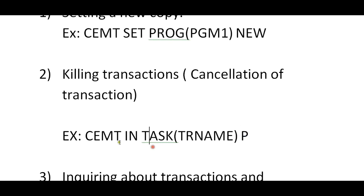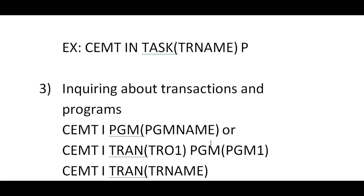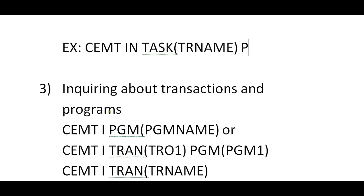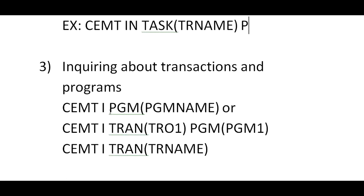The second function is killing or cancelling a transaction: CEMT ENQUIRE TASK and transaction name, then P for purge. We have a useful ENQUIRE command — once you enter CEMT ENQUIRE, it gives all tasks and functions you can work with. If you want to purge a particular transaction, you first enquire the transaction name and then select the purge action.